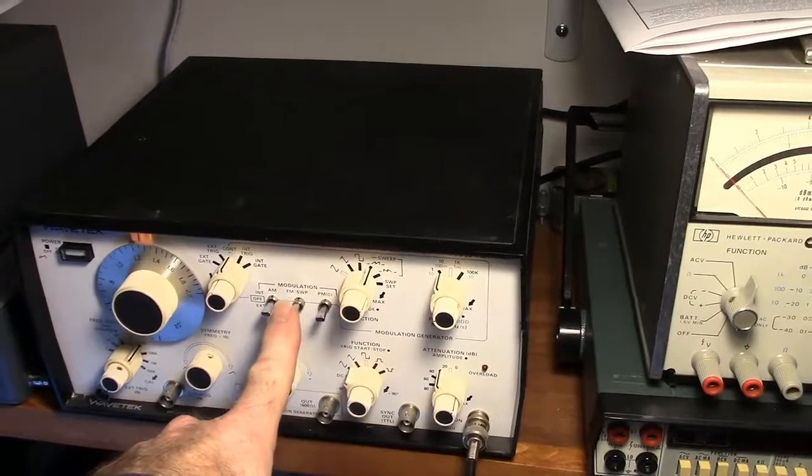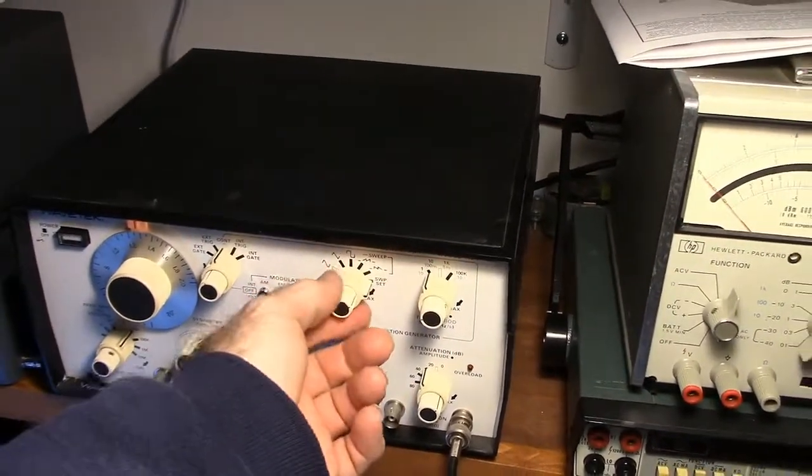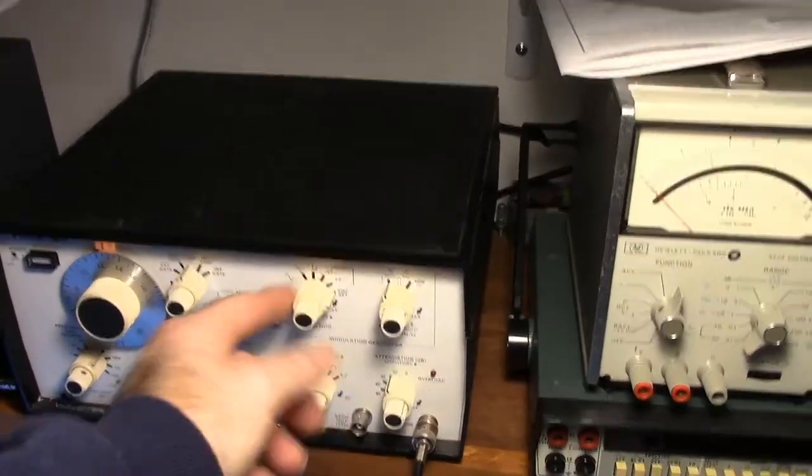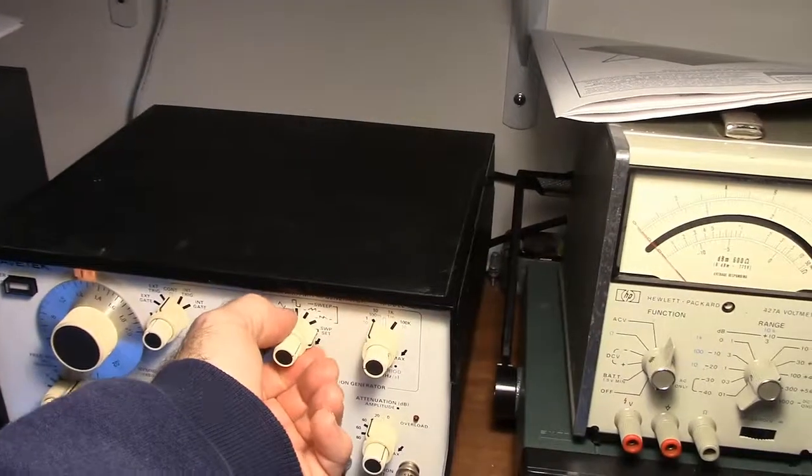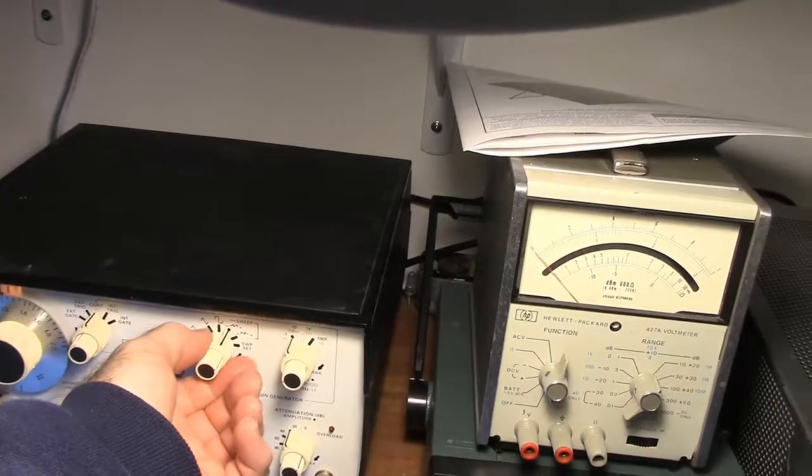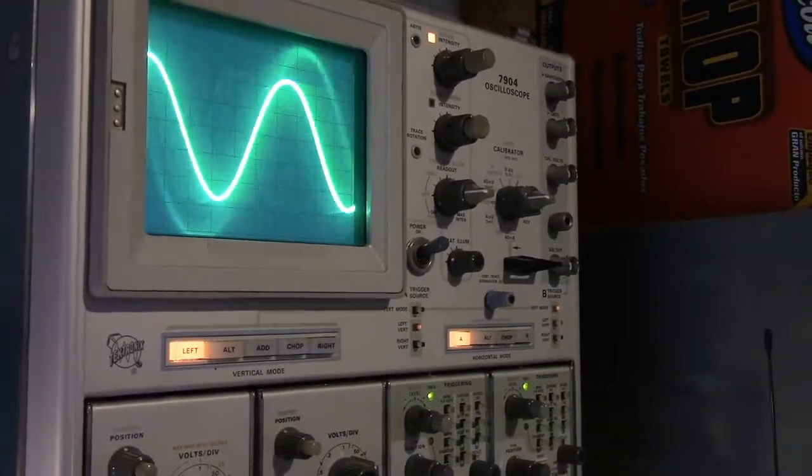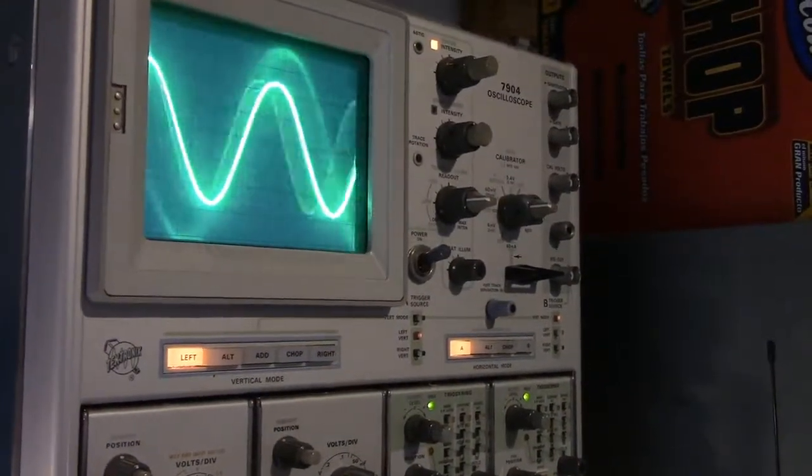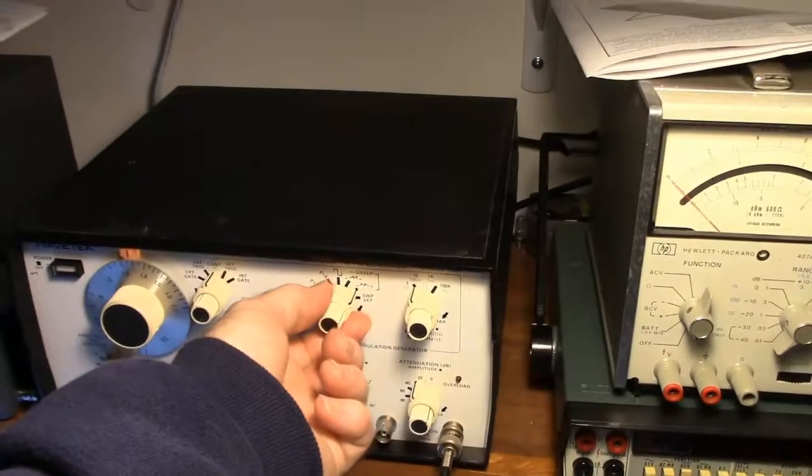Okay, we can also go into a sweep mode. Where you set your frequency here. And then with the function control, you can either sweep up or down. Either sweep up in frequency or sweep down in frequency. So here, here we're sweeping down in frequency. I'm sorry, up in frequency. And here we're sweeping down in frequency, using the sweep function here.